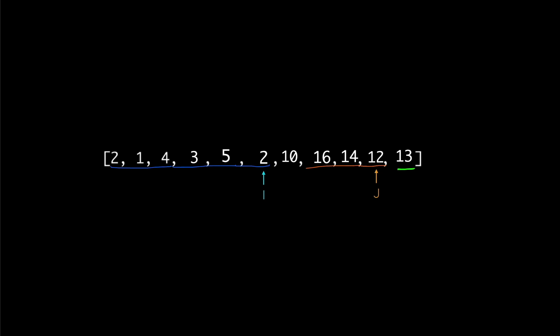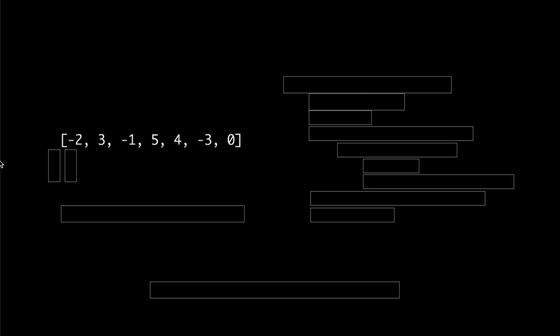Once the swap is done, we're done partitioning. From our partition function, we return the index of the pivot, which is i plus 1. Now that we understand how the partition algorithm works, let's take a look at some pseudocode. We call this function partition, and it takes three arguments: the given array, l and r. It applies partition to the section of the array between l and r.